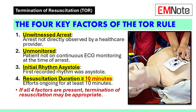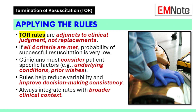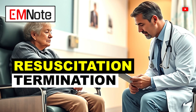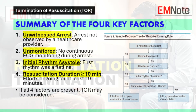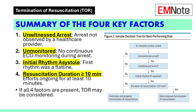This is where the rule suggests it might be appropriate to consider stopping resuscitation — it's a signal to pause and reevaluate, but not an automatic decision. This is where your clinical judgment comes in. We still need to look at the whole picture: What are the patient's other health conditions? Do we know their wishes about resuscitation? Are there any other unique factors in their case? This rule helps us make a more informed and thoughtful decision — it's a framework to guide us, not a rule that dictates our actions.